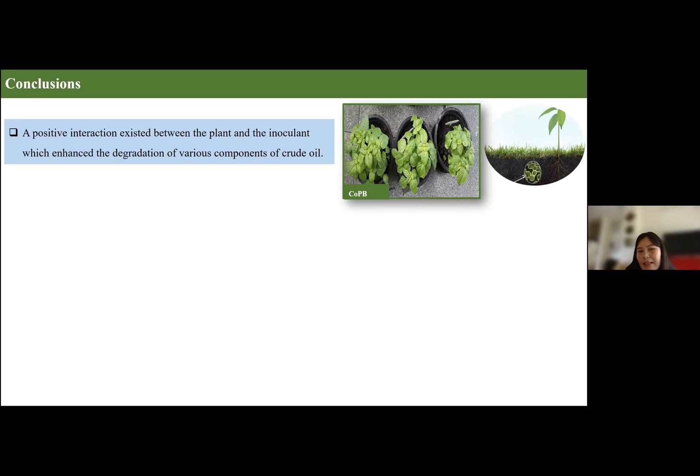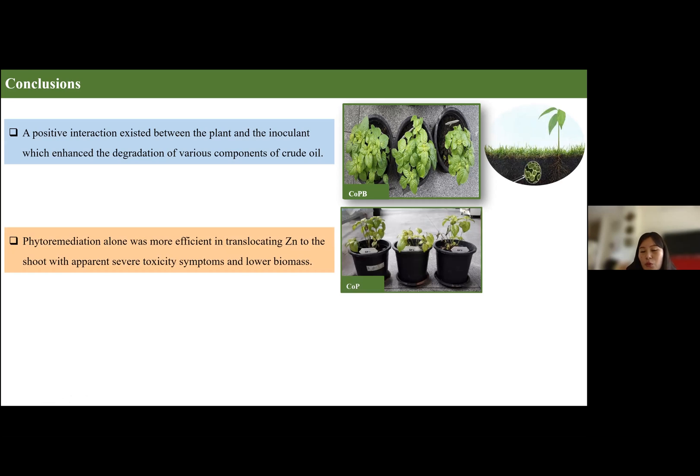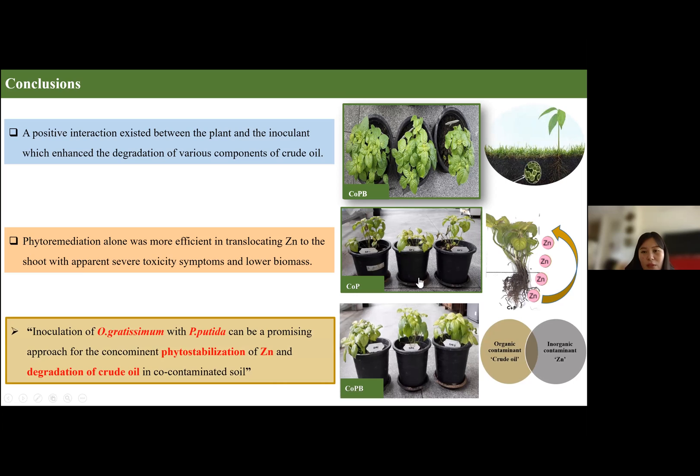In summary, there was a positive interaction between the plant African basil and the microbe Pseudomonas putida, which helped in removal of crude oil from soil. However, when it comes to removal of zinc, the treatment which did not use bacteria was most efficient. Zincs were retained in the roots and transfer to the shoot was minimal, meaning these plants can be used for stabilization, making zinc immovable in the environment. Overall, a combination of African basil with Pseudomonas putida can help stabilize zinc and remove crude oil in contaminated soil.